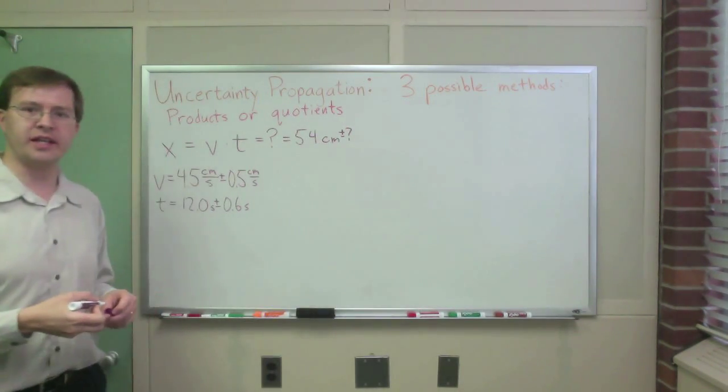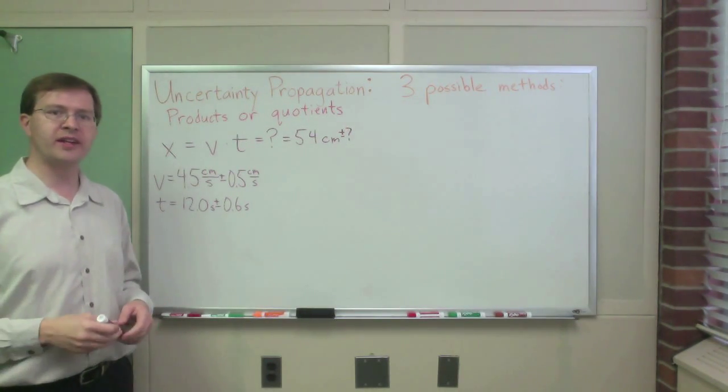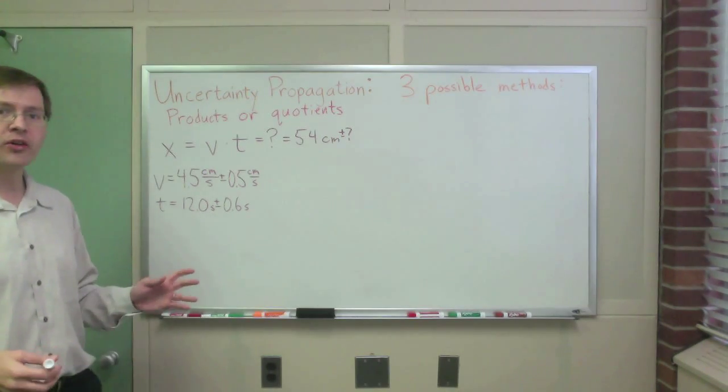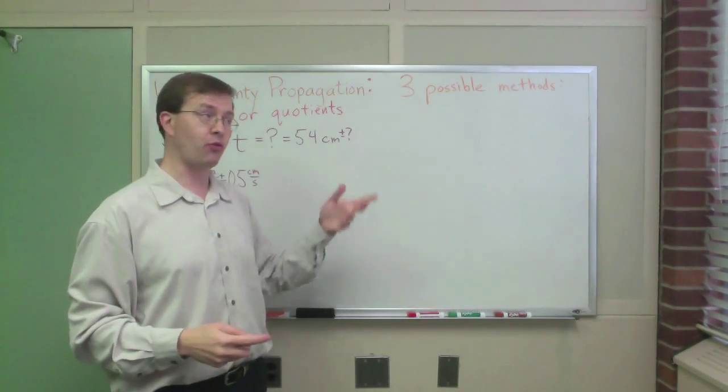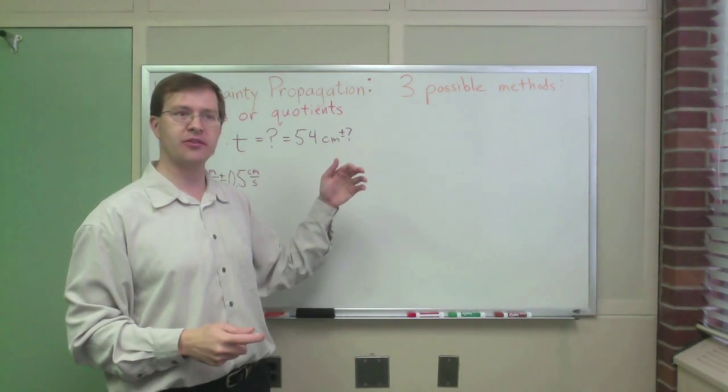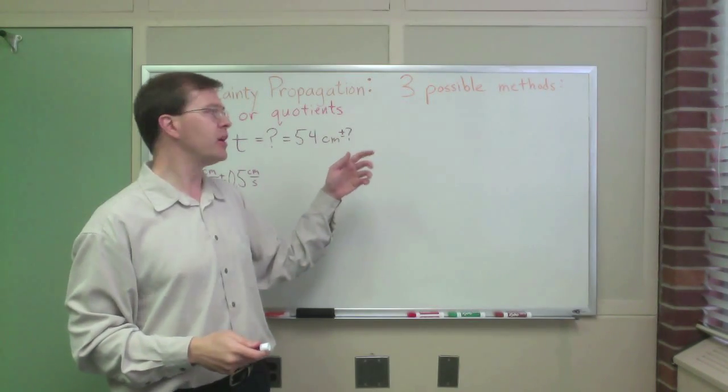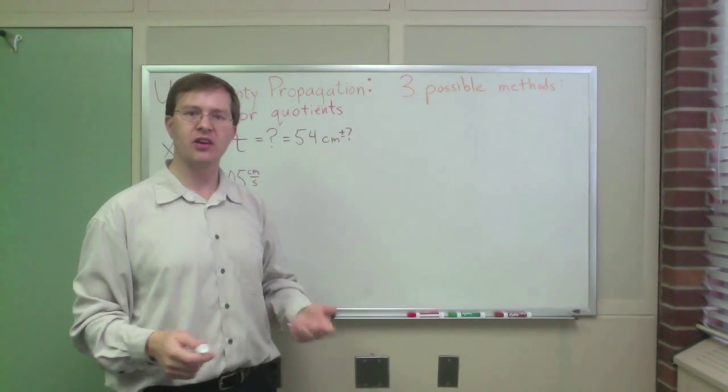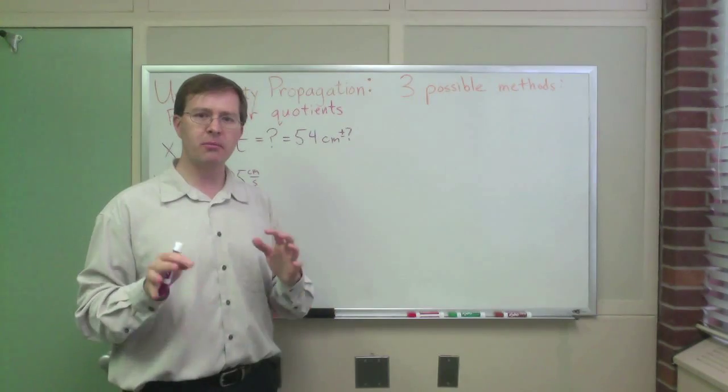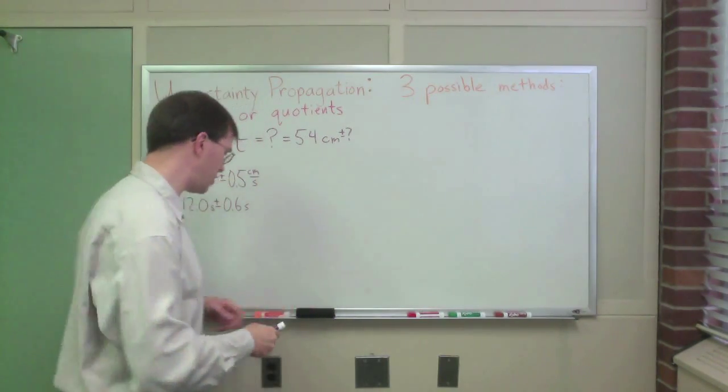But I'm not sure what the uncertainty is. We need to find a rule for finding the uncertainty. As before, there are going to be three possible methods. When I talked about sums and differences and uncertainty propagation, there are going to be three possible methods for this, for adding up these uncertainties.